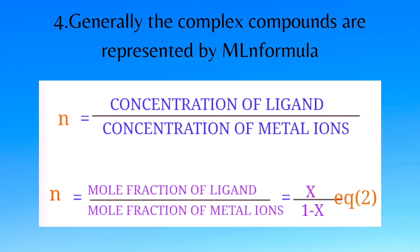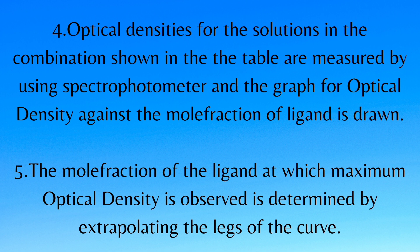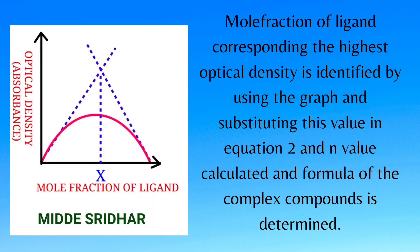Now optical densities for the solutions prepared by mixing metal ion and ligand solutions are determined by using spectrophotometer, and a graph is drawn for optical density or absorbance against the mole fractions of the ligand. The mole fraction of ligand at which maximum absorbance or optical density is observed is determined by extrapolating the legs of the curve.